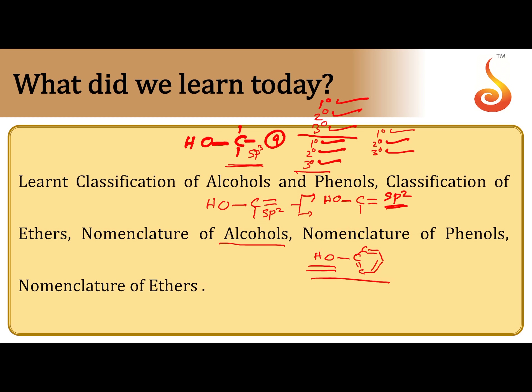Coming to the nomenclature: according to IUPAC, alcohols are named as alkanol (alk + an + ol). Ethers are named as alkoxyalkanes. Phenol is both common name and IUPAC name. For alcohol common names: name of alkyl group followed by 'alcohol' — methyl alcohol, ethyl alcohol, isopropyl alcohol. For ether common names: name both alkyl groups in alphabetical order followed by 'ether'; if identical, use 'di' prefix — diethyl ether.